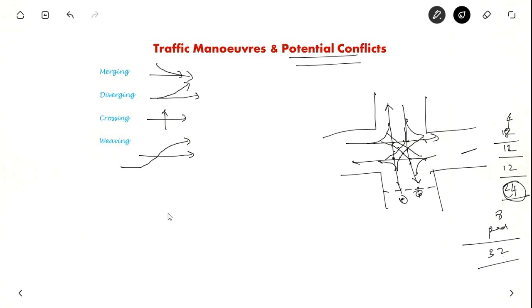The same exercise you could do and try for a road with a three-armed intersection. Around nine conflicts will come without including pedestrians.